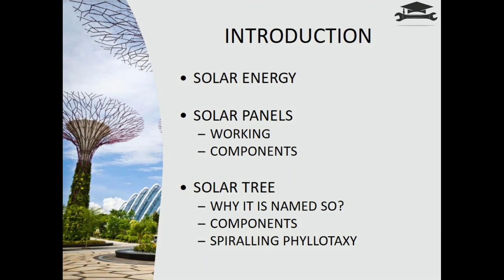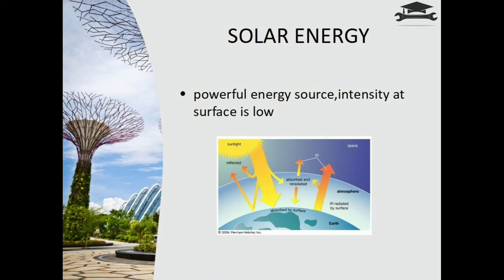Before moving into the topic, I'd like to give a brief insight on solar energy, the key aspect of this topic, and solar panels, the main component of solar trees. We know the sun is a powerful source of energy, but the intensity at Earth's surface is much lower, suited for living conditions. Solar energy or radiation from the sun is capable of producing heat, causing chemical reactions — such as ejection of electrons — or generating electricity. The total amount of solar energy incident on Earth is highly in excess of the world's current energy requirements.